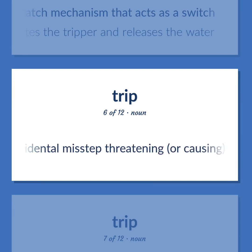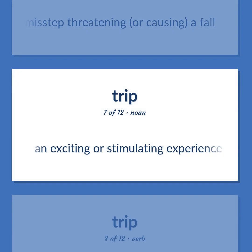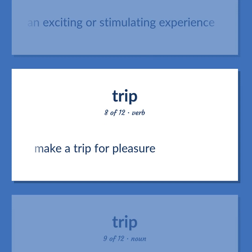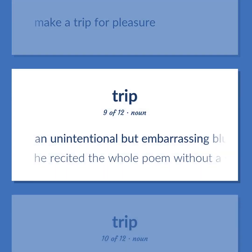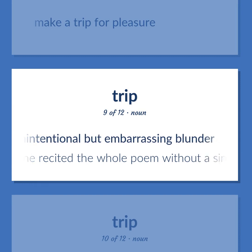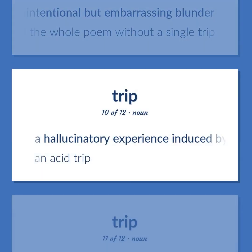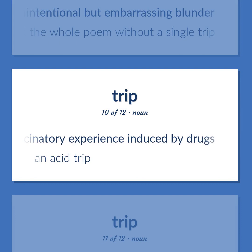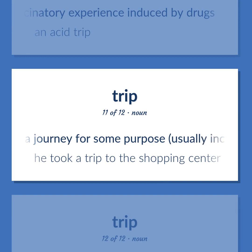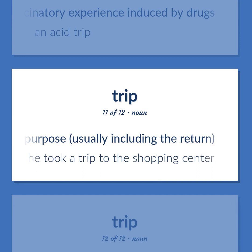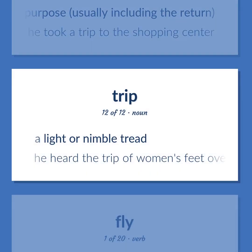Trip: An accidental misstep threatening, or causing, a fall. An exciting or stimulating experience. Make a trip for pleasure. An unintentional but embarrassing blunder — he recited the whole poem without a single trip. A hallucinatory experience induced by drugs — an acid trip. A journey for some purpose, usually including the return — he took a trip to the shopping center. A light or nimble tread — he heard the trip of women's feet overhead.